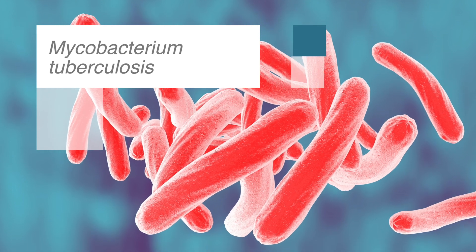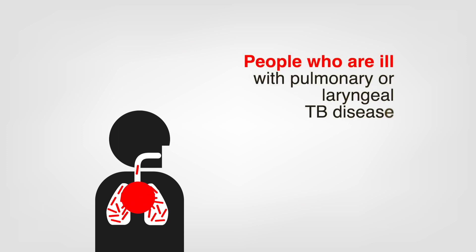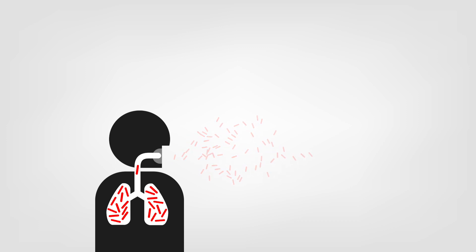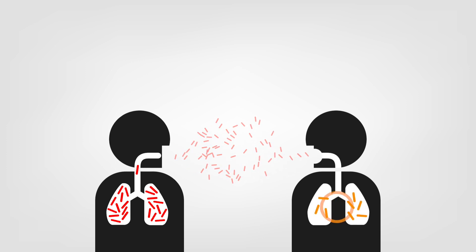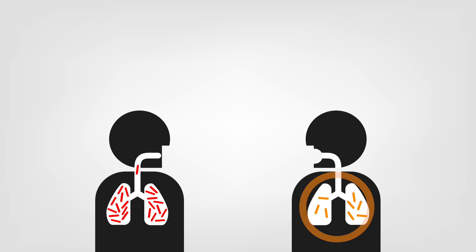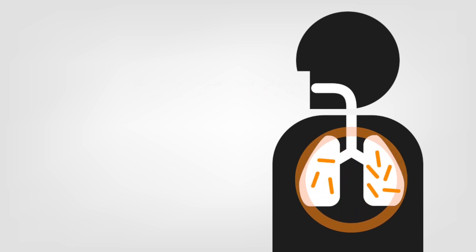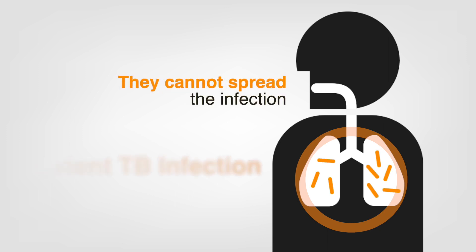Tuberculosis, also called TB, is caused by Mycobacterium tuberculosis and is spread from person to person through the air. People who are ill with pulmonary or laryngeal TB disease can spread infectious particles into the air when they cough, sneeze, shout, laugh, or sing. Infection occurs when another person inhales these particles and they reach the alveoli of the lungs, where an immune response is initiated. Although these people have viable TB bacteria in their body, the bacteria are inactive. As long as the bacteria remain contained by the immune system, these individuals have latent TB infection. They cannot spread the infection to others.